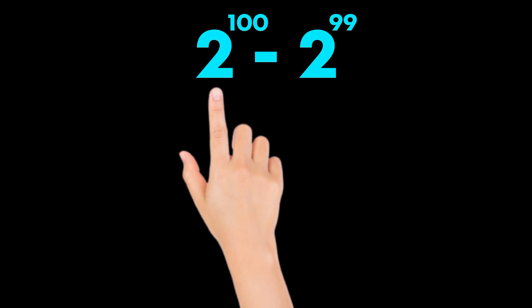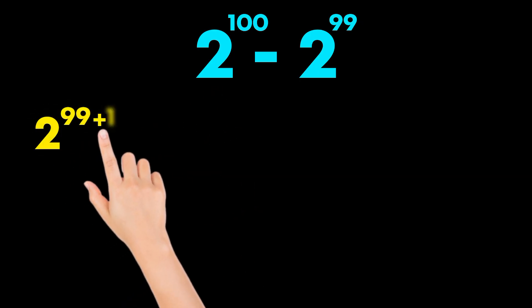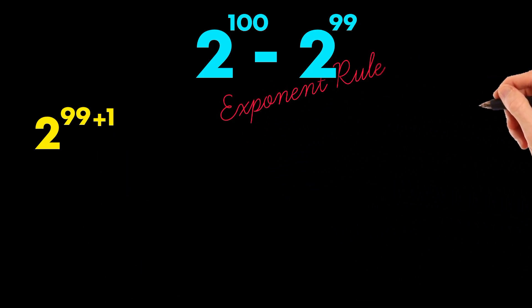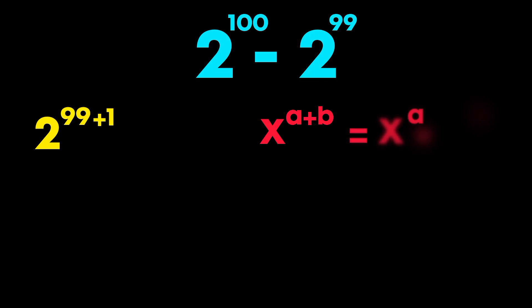We rewrite 2 to the power of 100 as 2 to the power of 99 plus 1. Remember the exponent rule. x to the power of a plus b equals x to the power of a times x to the power of b.